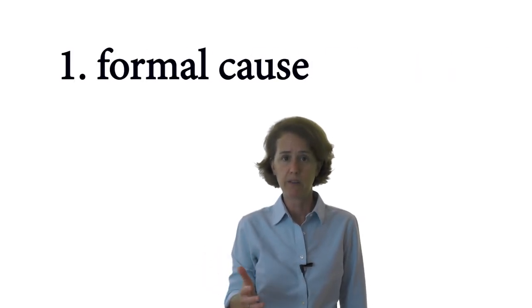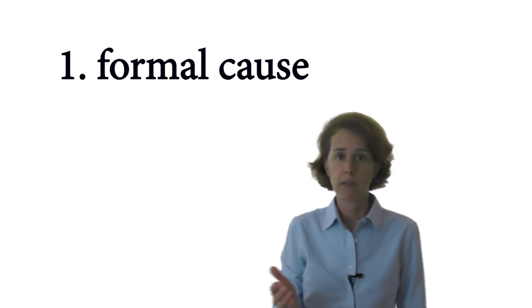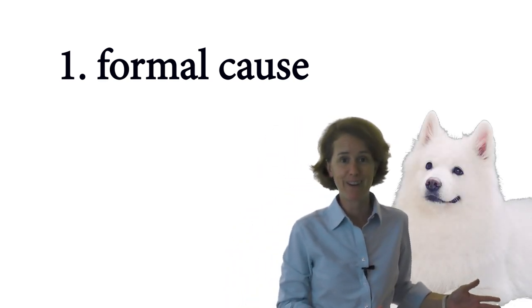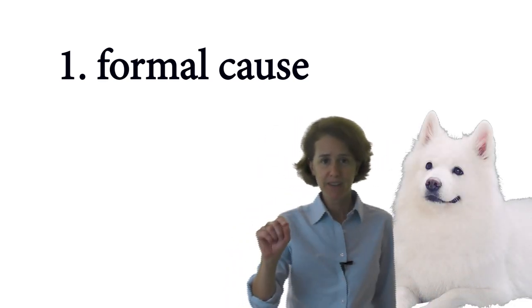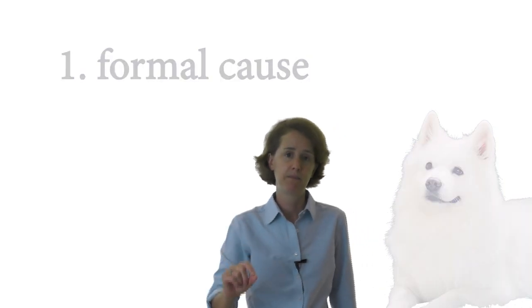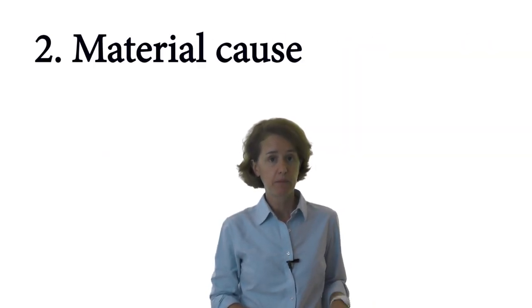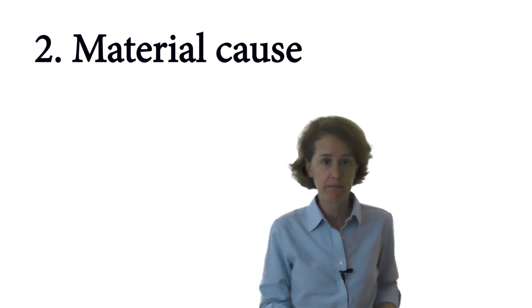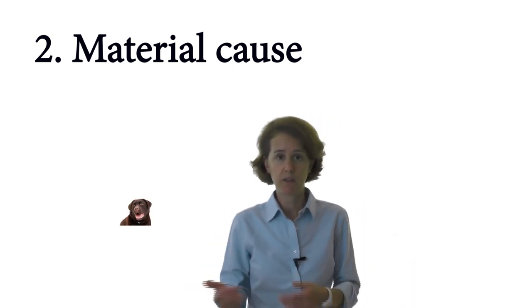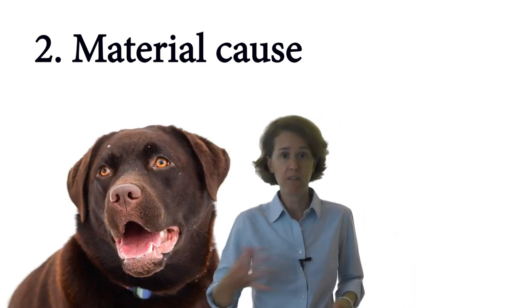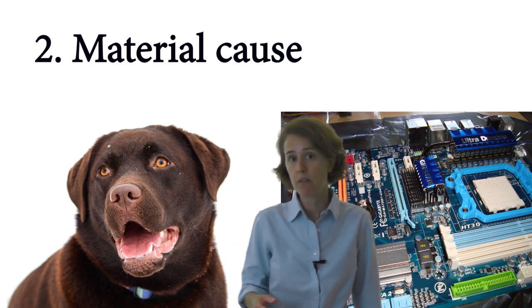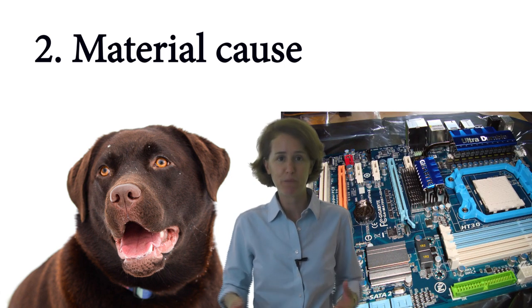How do I know that this is a dog and not another kind of thing? That's the formal cause. Second, the material cause: what is the thing actually made of? In the case of a dog, it's fur, blood, guts, and so forth. In the case of a computer, it's microchips, circuit panels, motherboards, plastic cases, and so on.